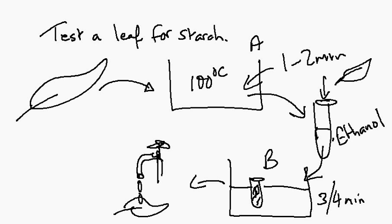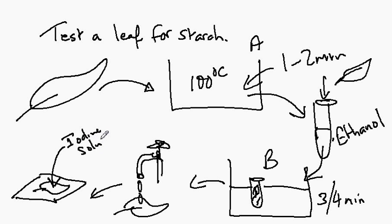Okay, so wash the leaf and then put it onto a white tile. Okay, here's the leaf. It's sitting on the white tile, and I want you to then add iodine solution as a test for starch.